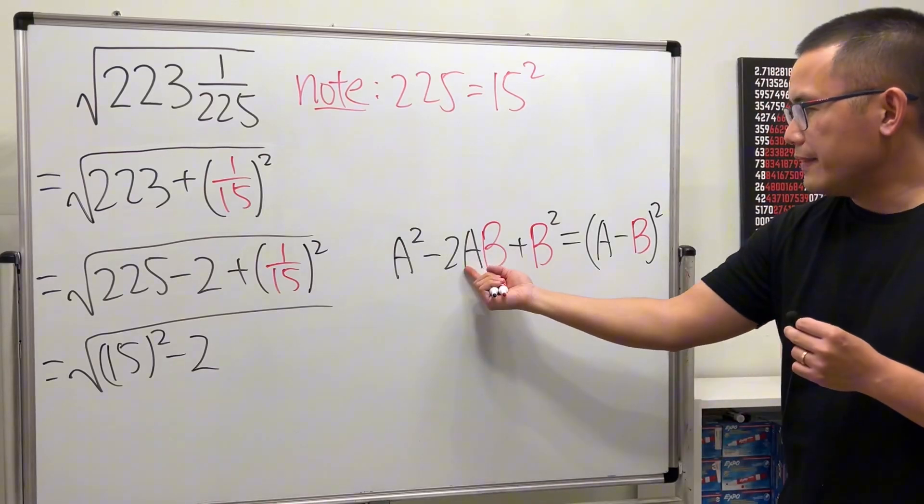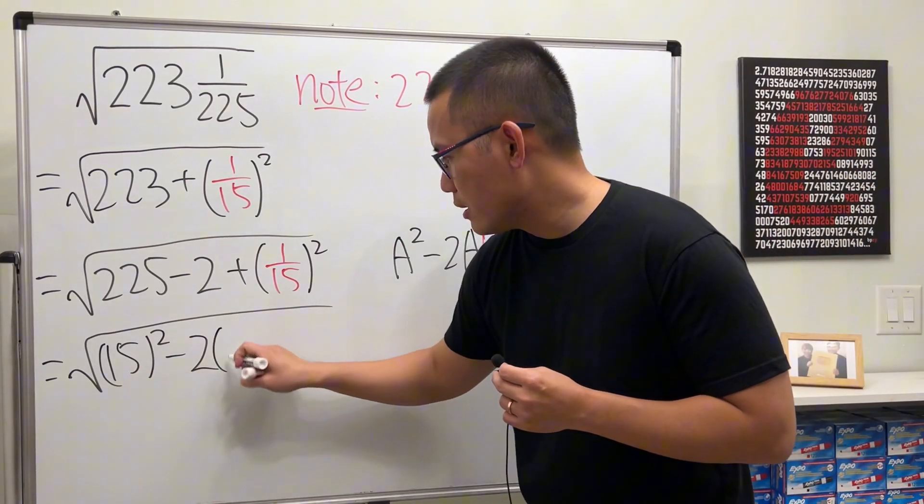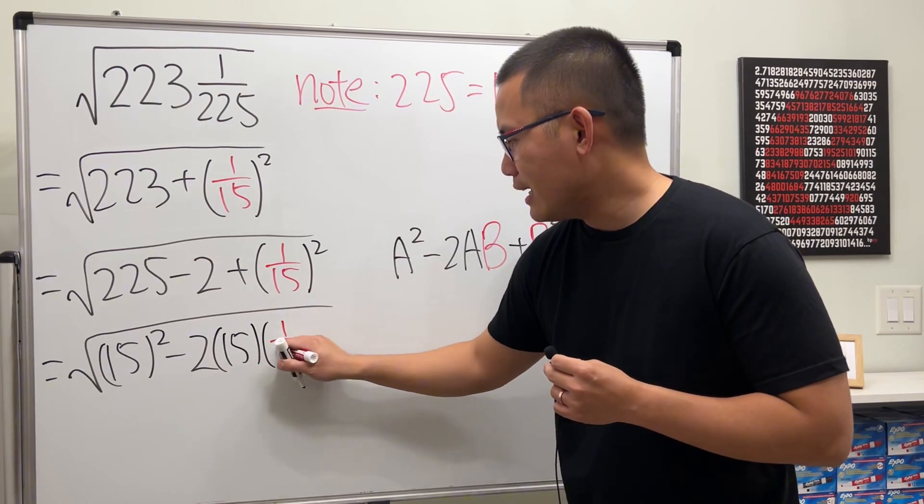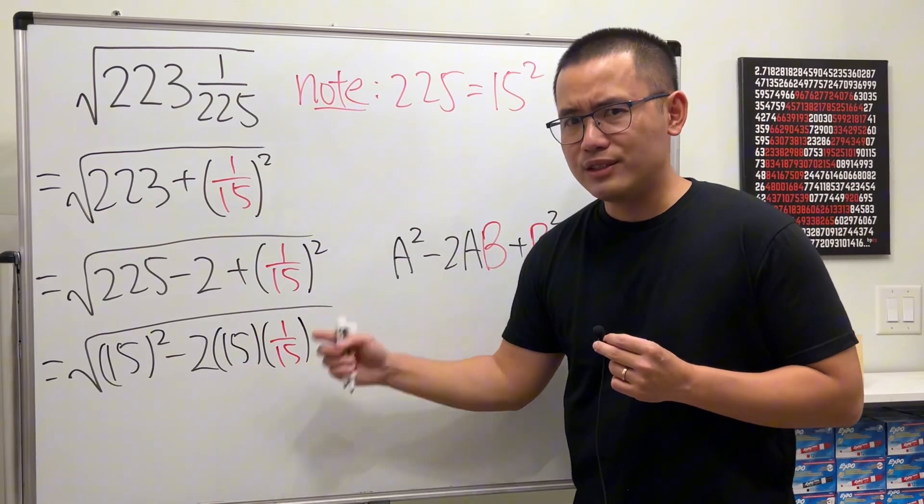But it looks that we should have a and b. a is 15. b is 1 over 15. Aha! When you multiply 15 and 1 over 15, it's just 1.